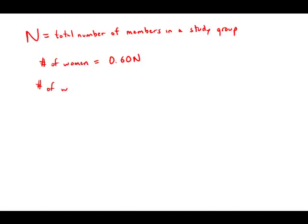So the number of women lawyers equals 0.45 times 0.6N. And with a little bit of multiplication, we find that this is 0.27N. So in other words, 27% of the members of the group are women lawyers.